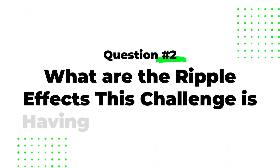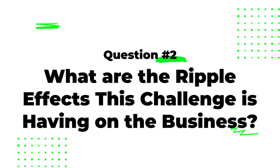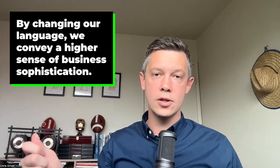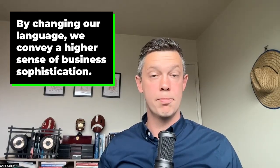Question number two: 'What are the ripple effects this challenge is having on the business right now?' You'll notice that's almost the same question as 'how is this challenge impacting the business,' but we're using more intelligent, sophisticated, business-oriented language. Simply by changing our language, we communicate a higher level of sophistication to our buyer. I've used this question personally 200 or 300 times and it works great. As you're having a discovery conversation, summarize their problems, confirm you're on the right track, and then ask: 'Can you help me understand the ripple effects this challenge is having on the rest of the business?' It works spectacularly well.